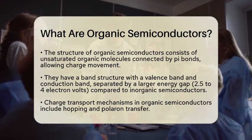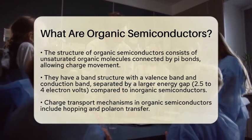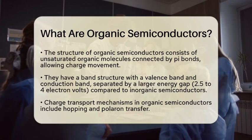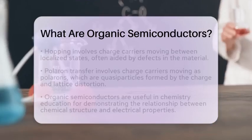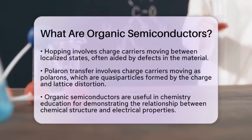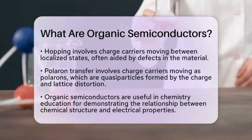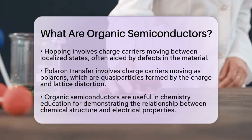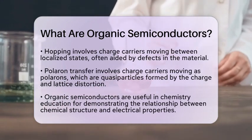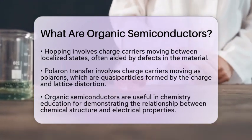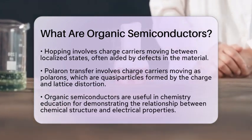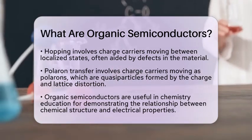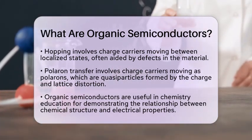When it comes to charge transport, organic semiconductors utilize mechanisms like hopping and polaron transfer. Hopping involves charge carriers moving between localized states, which can be facilitated by defects or impurities in the material. Polaron transfer, on the other hand, involves charge carriers moving as polarons, which are quasiparticles made up of a charge carrier and the distortion it causes in the surrounding lattice.